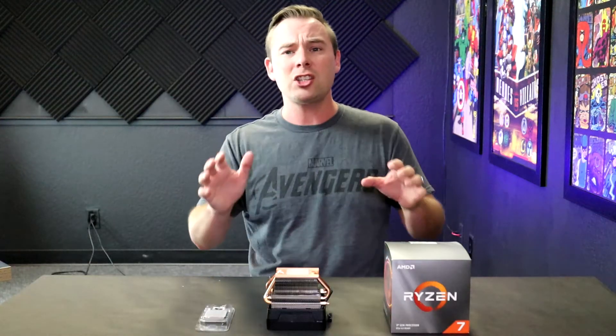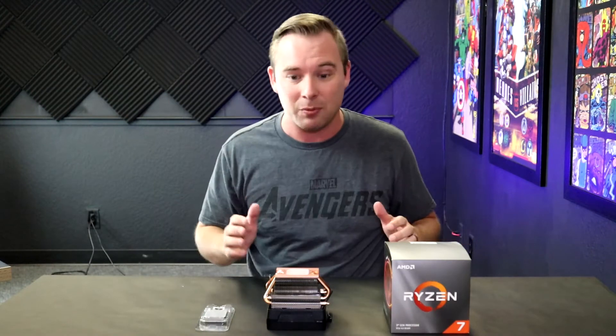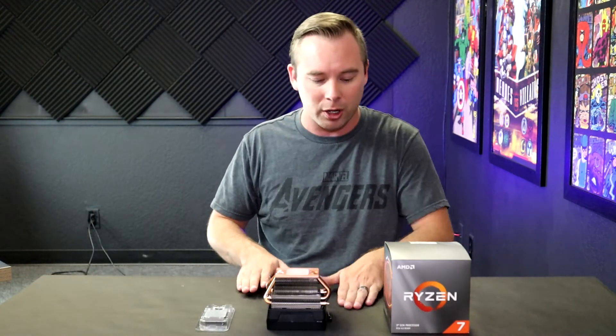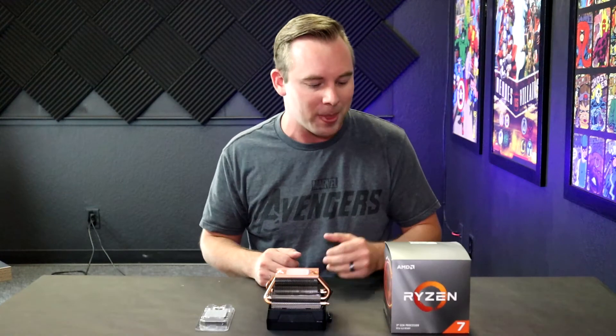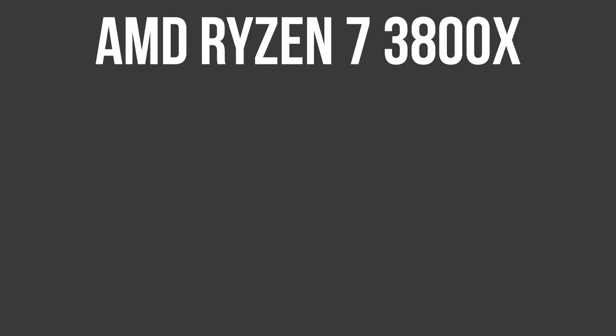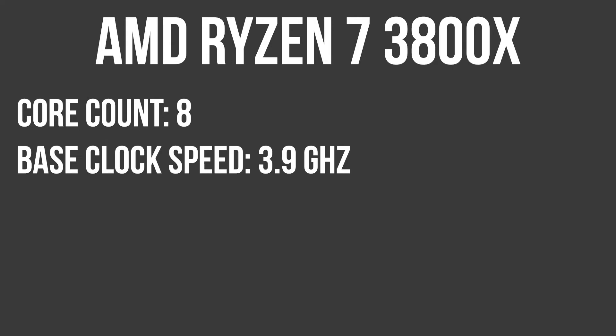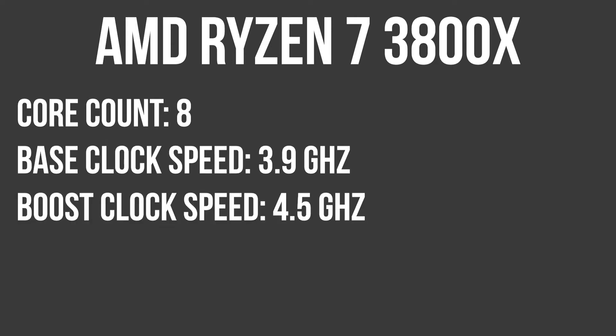So let's actually buy a CPU. Looking at AMD processors because I know I want to go AMD — I get a better performance per dollar spent. And I actually went with this one: the AMD Ryzen 7 3800X. It's an eight-core CPU with a base clock of 3.9 gigahertz and a boost clock of 4.5 gigahertz.